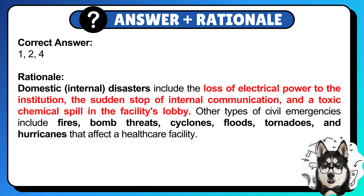Correct answer: 1, 2, and 4. Domestic or internal disasters include the loss of electrical power to the institution, the sudden stop of internal communication, and a toxic chemical spill in the facility's lobby.